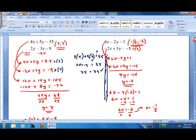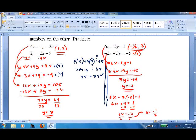Check it. We'll use the second equation. Negative 2 times negative 1 half plus 3 times negative 2 equals negative 5. 1 plus negative 6 equals negative 5. Negative 5 equals negative 5. It checks.